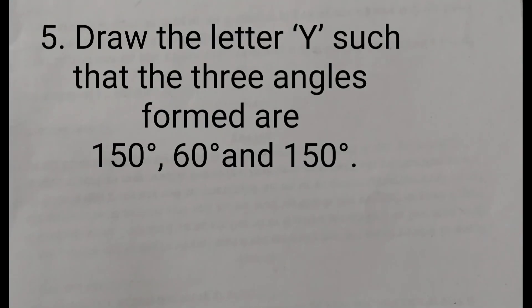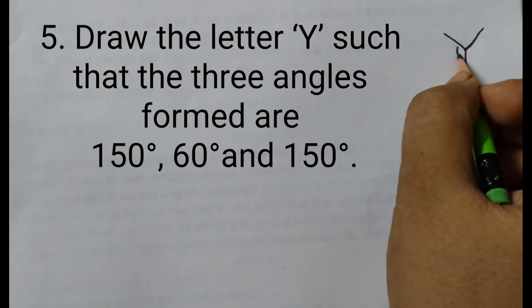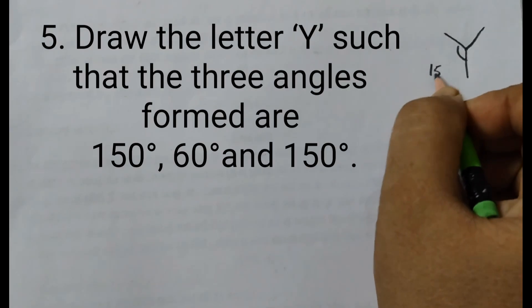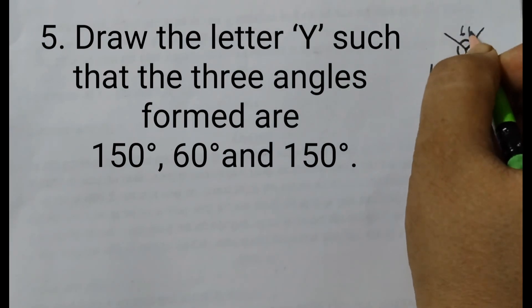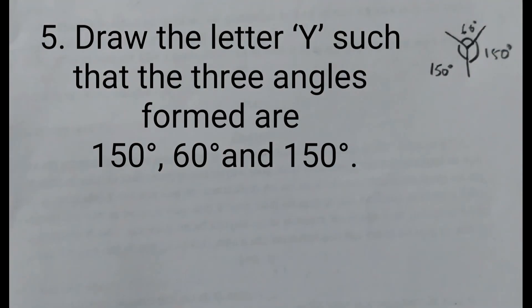Now we are going to do question number 5. Draw the letter Y such that the 3 angles formed are 150 degrees, 60 degrees and 150 degrees. So let us draw a rough sketch of this. This is how you have to draw it. This is Y and the angles formed here would be 150 degrees. This is 60 degrees and this one is 150 degrees.